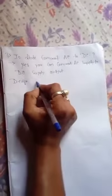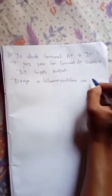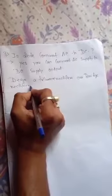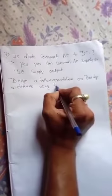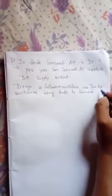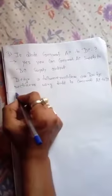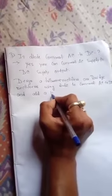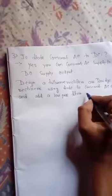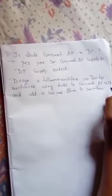Design a full wave rectifier or bridge rectifier. Use a diode to convert AC to DC, and add a low pass filter to smoothen the output voltage.